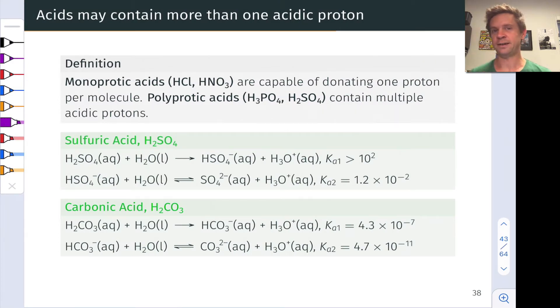Most of the acids we've seen to this point are monoprotic. They contain a single ionizable proton, things like HCl and HNO3 where the leading H has a subscript of 1 in the chemical formula.